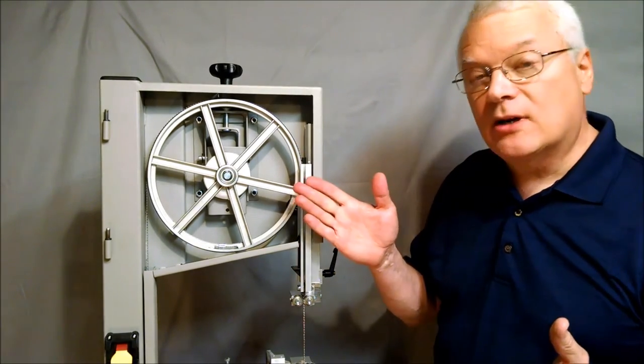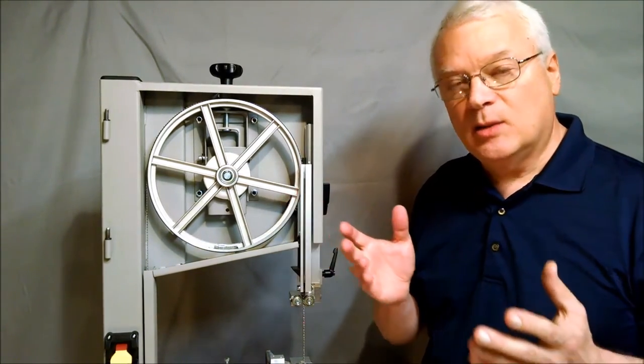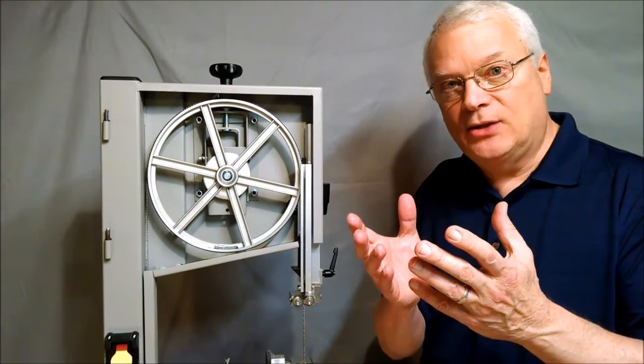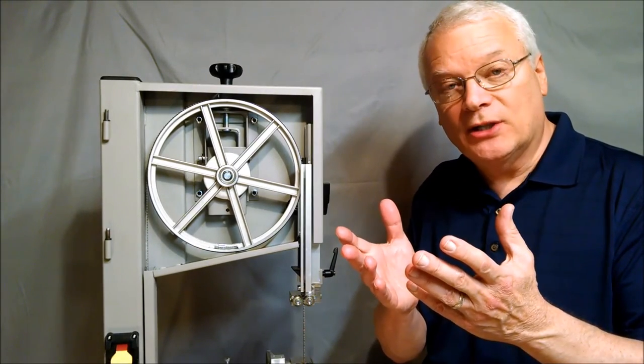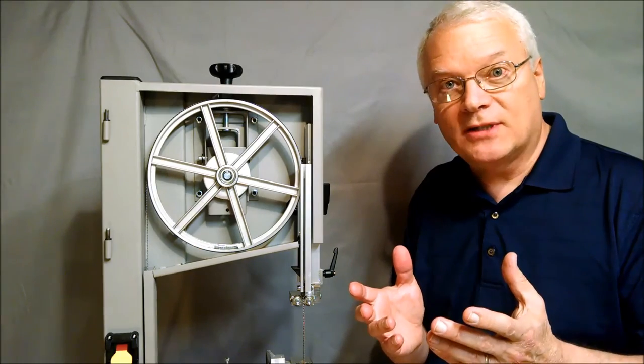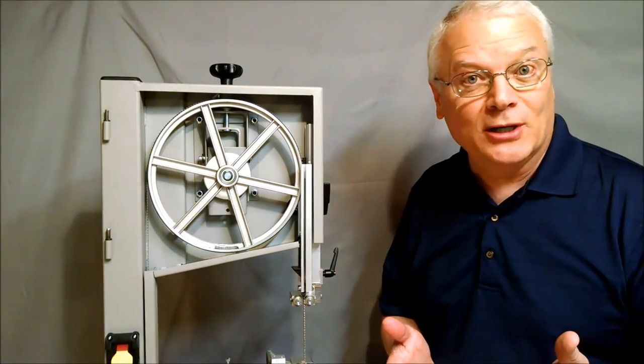Consequently, if both wheels are not perfectly balanced, the imbalances will at times be added to each other, increasing vibration, and at other times they will offset each other, reducing vibration.